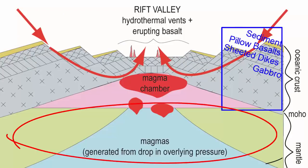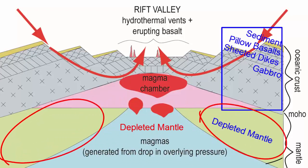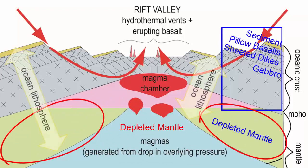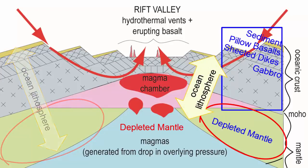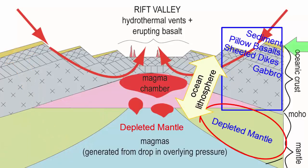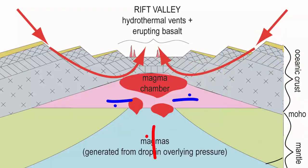Under the ocean crust is the mantle rock that melted to produce the magmas in the first place — sometimes referred to as depleted mantle because it has had magmas produced from it. It is attached to and under the crust above it, making up the base of the ocean lithosphere. So ocean lithosphere everywhere in the world is basically this same sequence: sediment, above pillow basalt, above basalt dikes, above gabbro, above mantle rock.